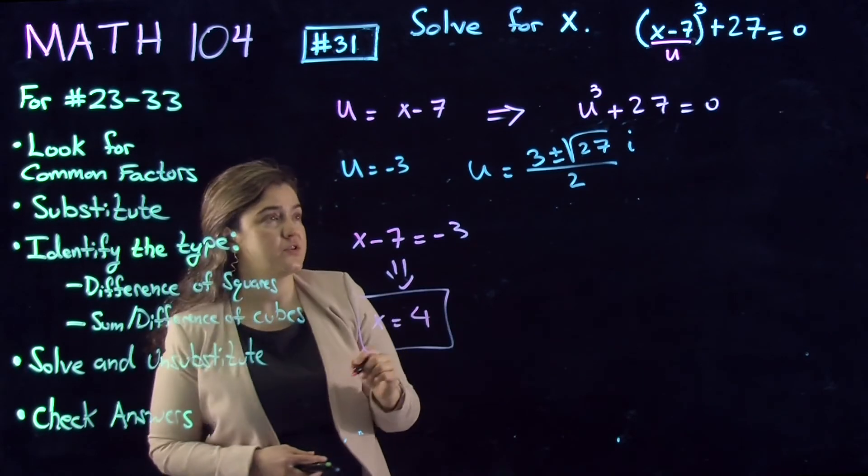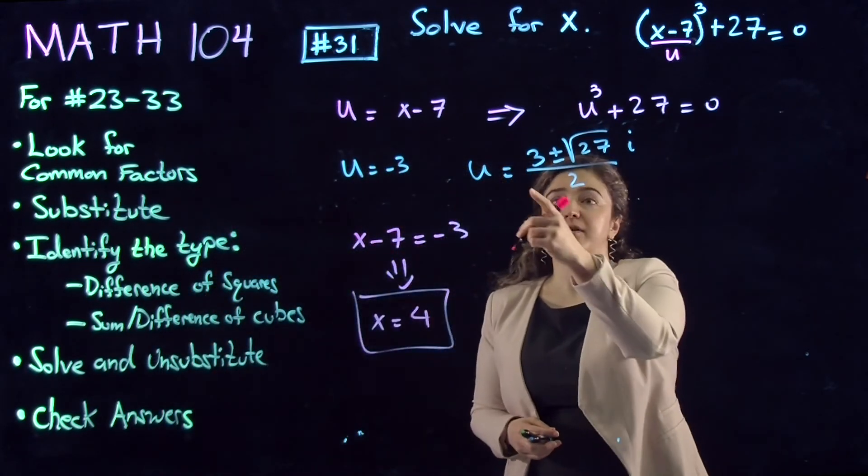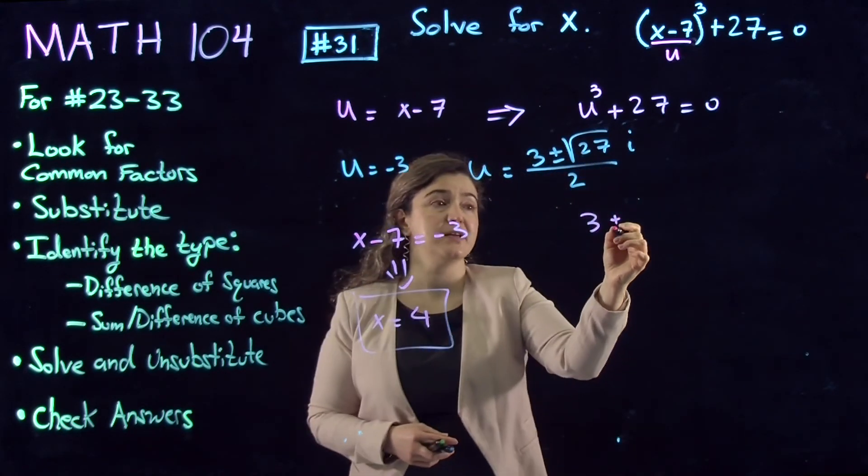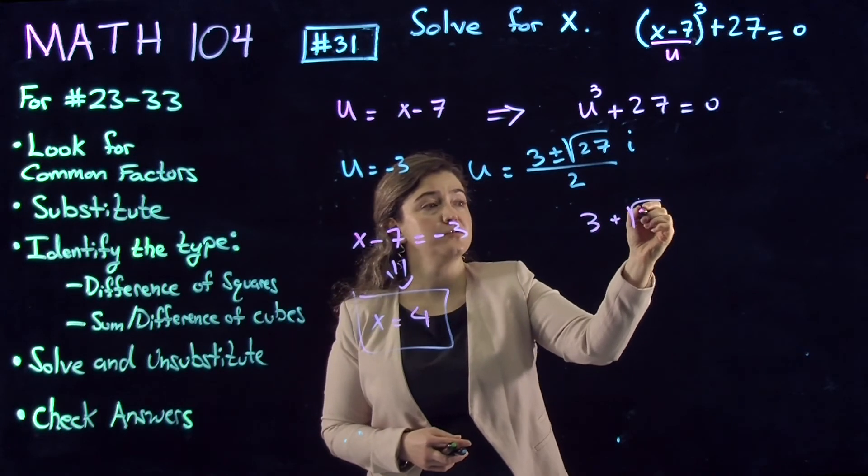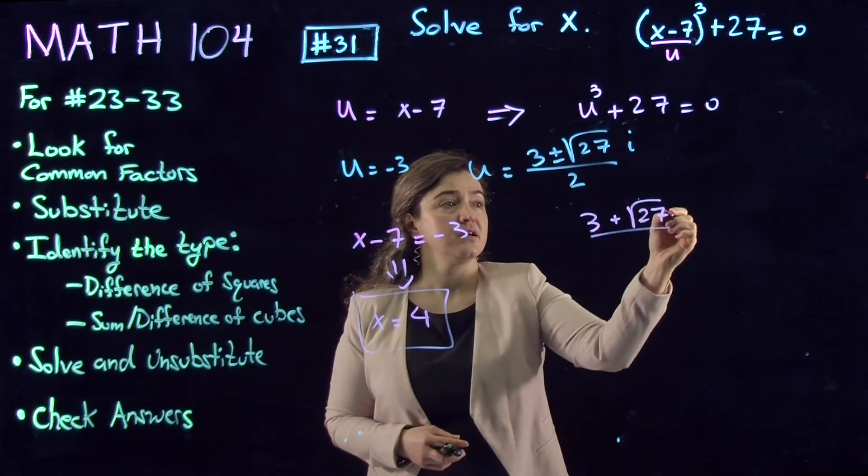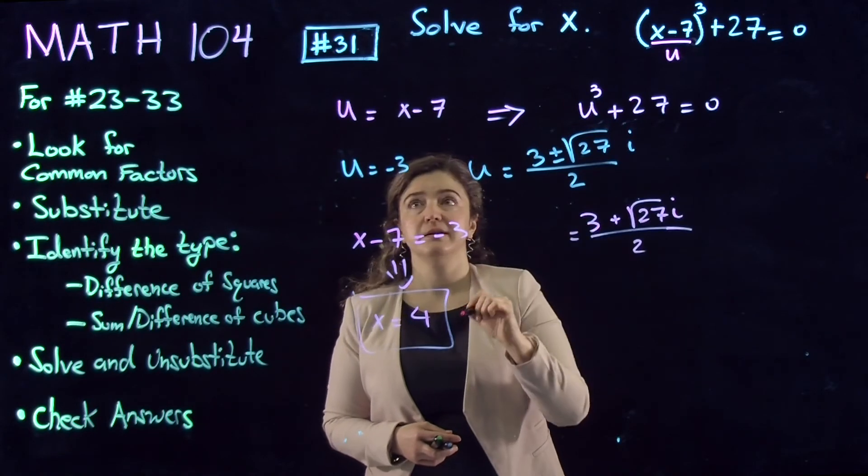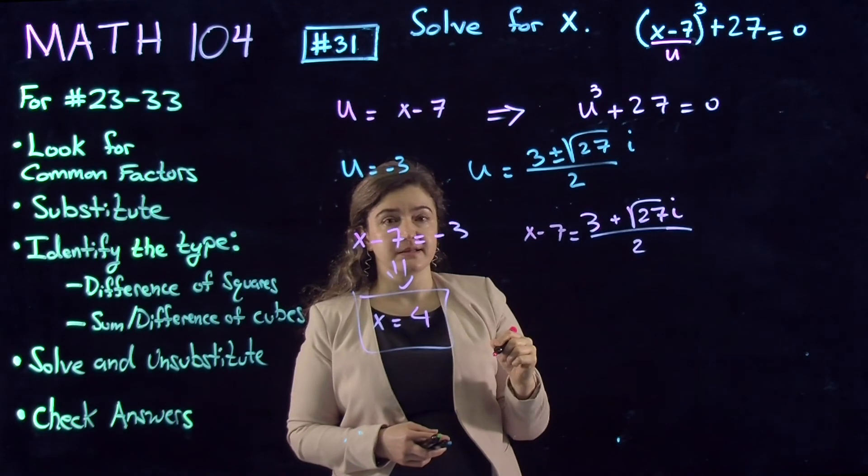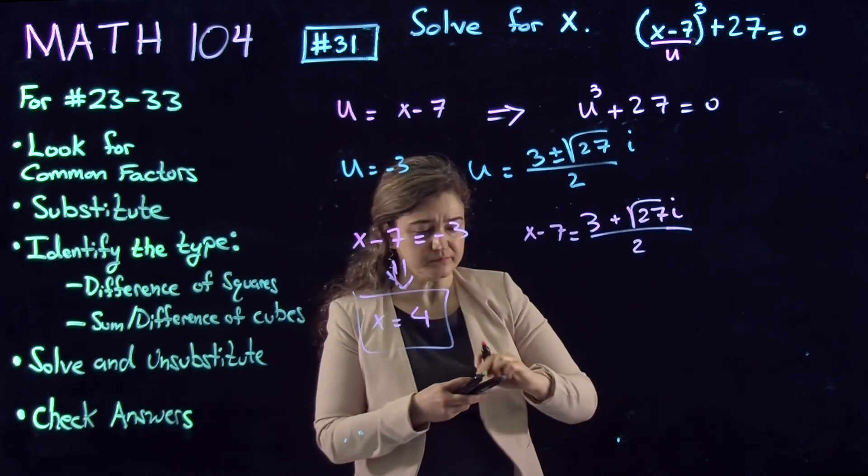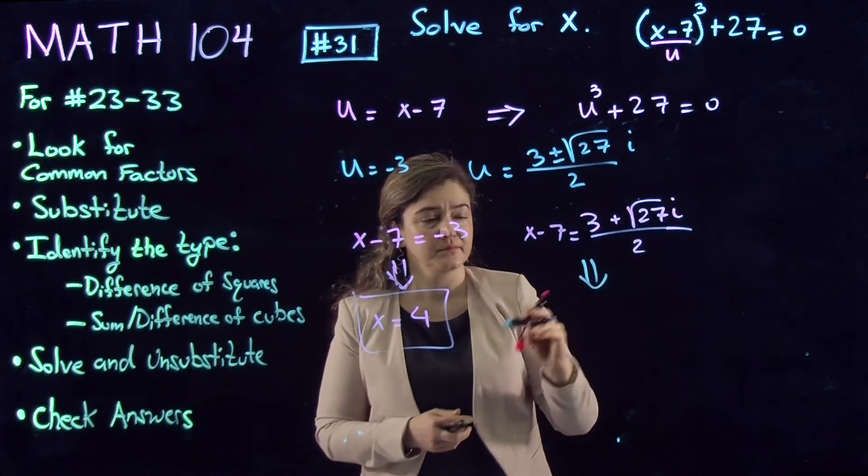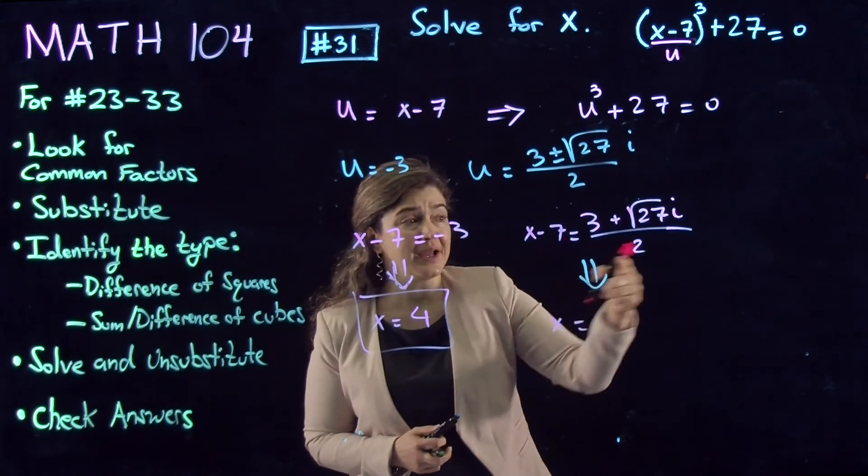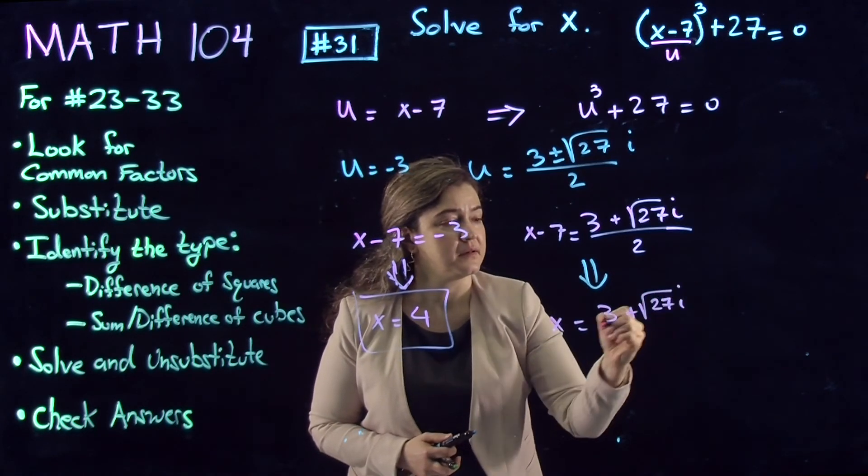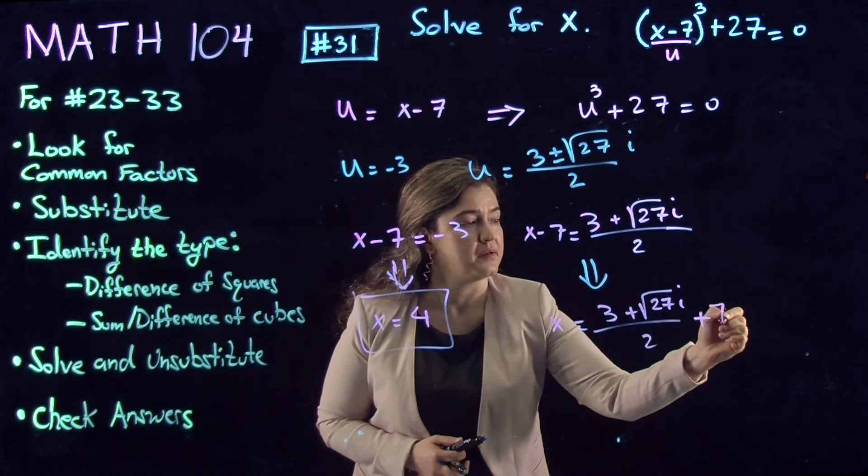The second solution comes from setting x-7 = (3+√27i)/2. So instead of u, I write x-7. This gives me x = (3+√27i)/2 + 7.